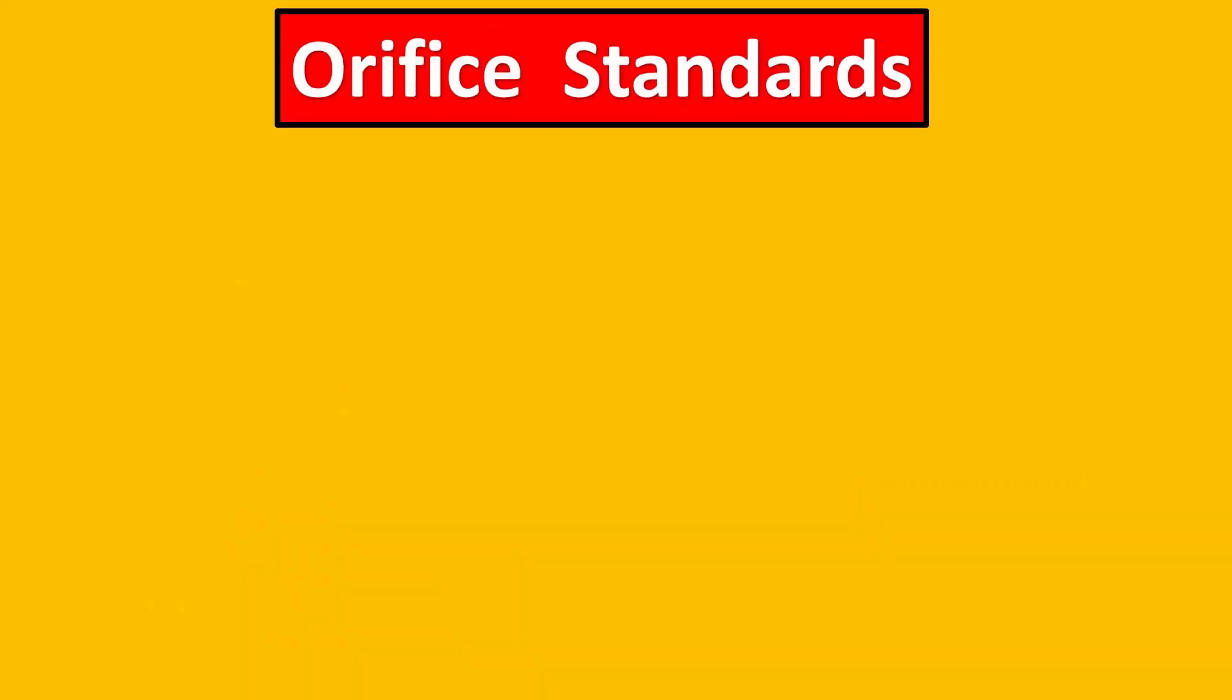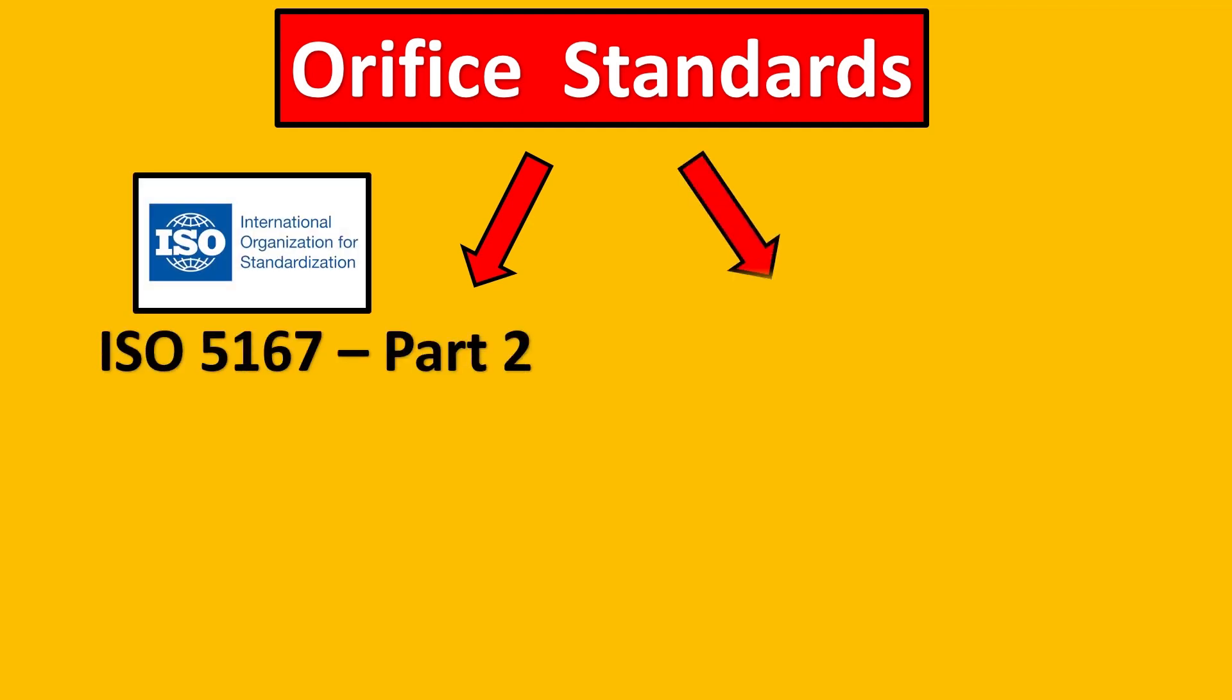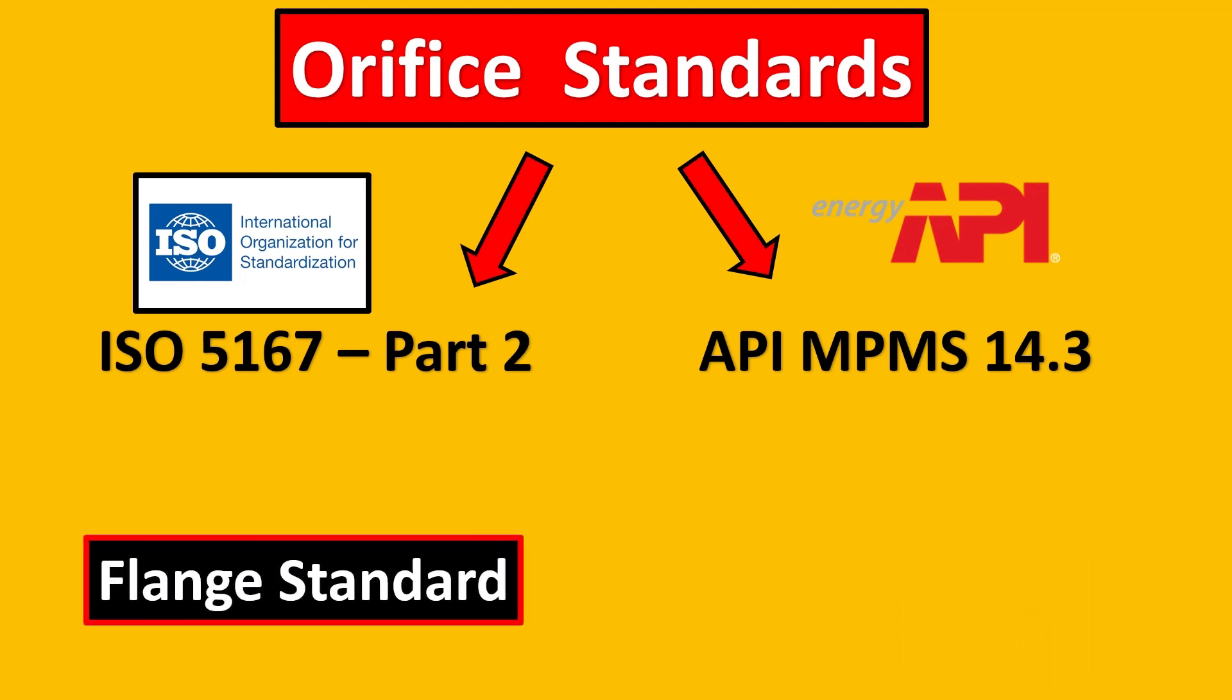The next most asked question is the orifice standards. So the first orifice standard which is the most used is ISO 5167 and the second one which is used is APA MPM is 14.3. The APA standard is specially for the hydrocarbon industry.